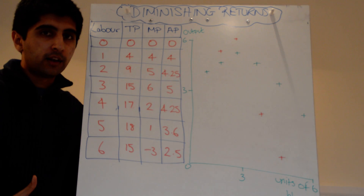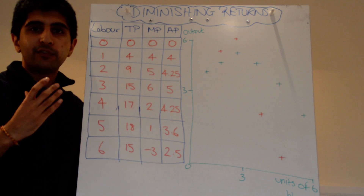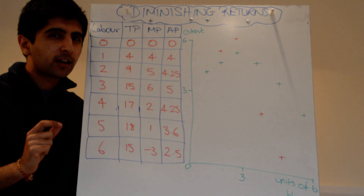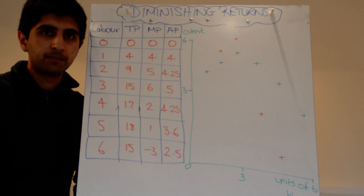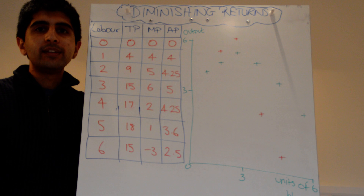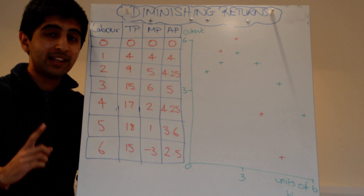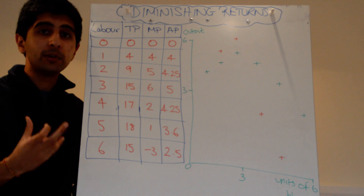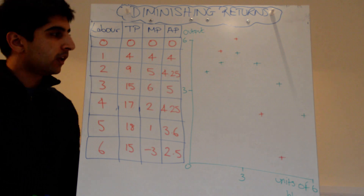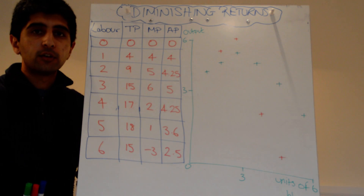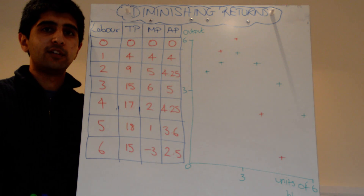We're looking at the short run, and in economics when we look at short run and long run for a firm, we're not looking at time periods — we're looking at the nature of our factors of production. In the short run, at least one factor of production is fixed. Normally two are fixed: land and capital.